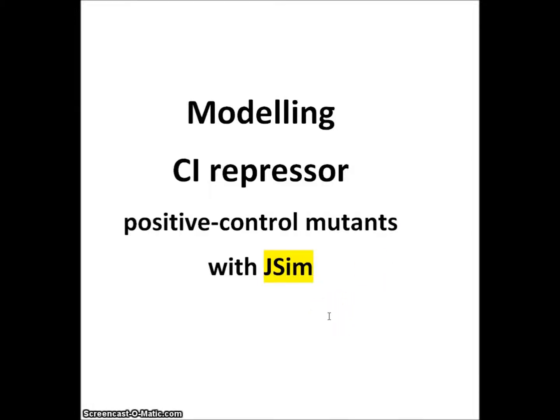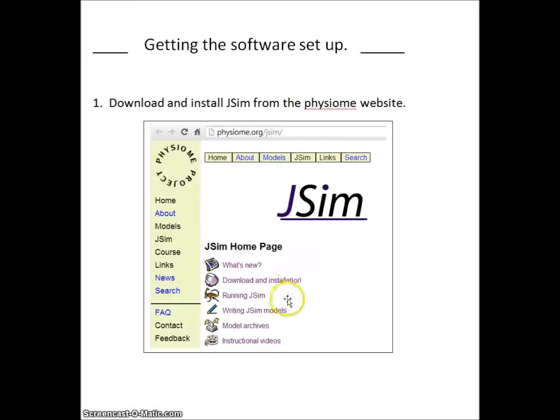This video shows how to use JSIM to simulate Kolkhoff and Muller Hill's data. JSIM can be downloaded from the Physiome website. Just do a Google search for JSIM.